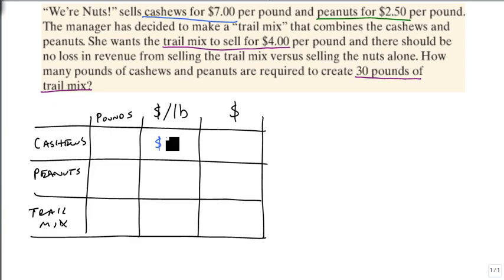We know that the cashews sell for $7 a pound, we know that the peanuts sell for $2.50 a pound. And we know that we have our mix - let's make this green so it matches better - $2.50, and our mix is $4.